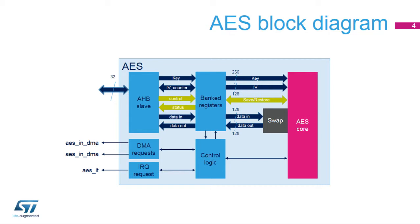The AES core is the unit in charge of processing data. Its logic supports 1, 8, 16 or 32-bit data swapping. Internal data paths are 128 bits wide for data and initialization values and 256 bits for keys. 128-bit keys are also supported.